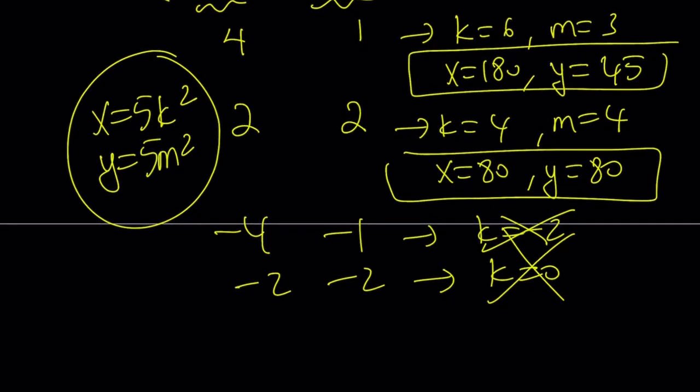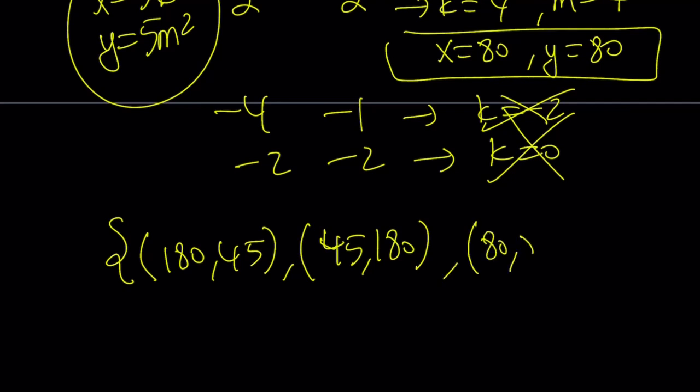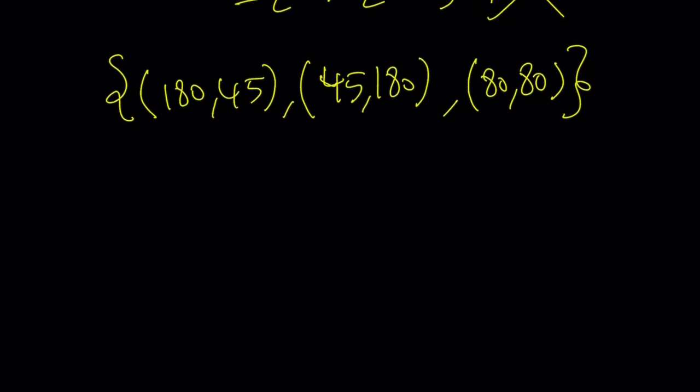So those are the possibilities. Let's write our solutions as ordered pairs. We got 180, 45. And of course, we can flip this and write 45, 180. And of course, 80, 80 is perfectly symmetrical. And this brings us to the end of this video.